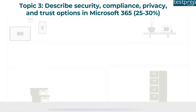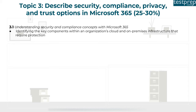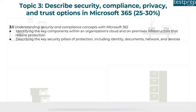Number six covers defining analytics capabilities in Microsoft 365 and on-premises infrastructure. Topic three addresses security, compliance, privacy, and trust options in Microsoft 365. Number one: understanding security and compliance concepts, including identifying key components of an organization's cloud and on-premises infrastructure that require protection, and describing the key security pillars including identity, documents, network, and devices.